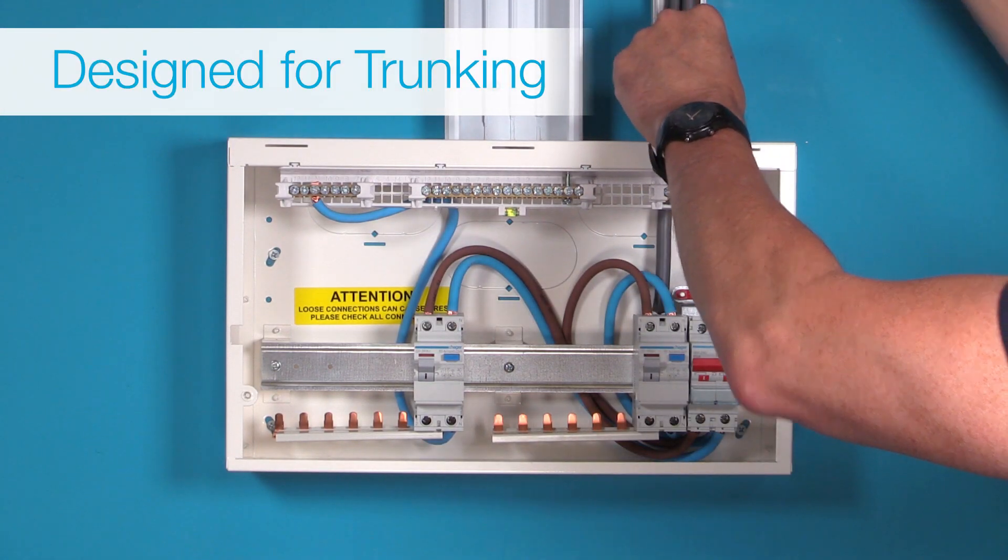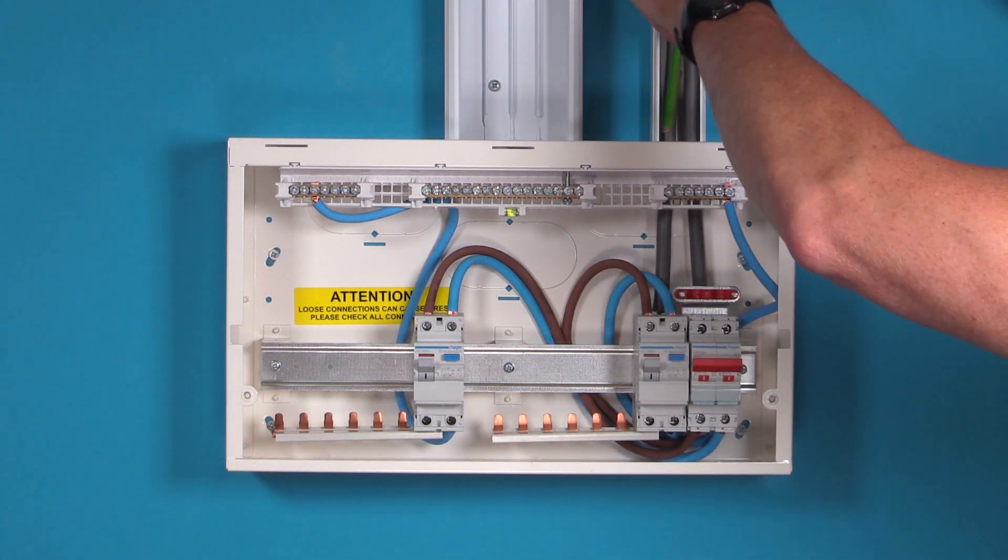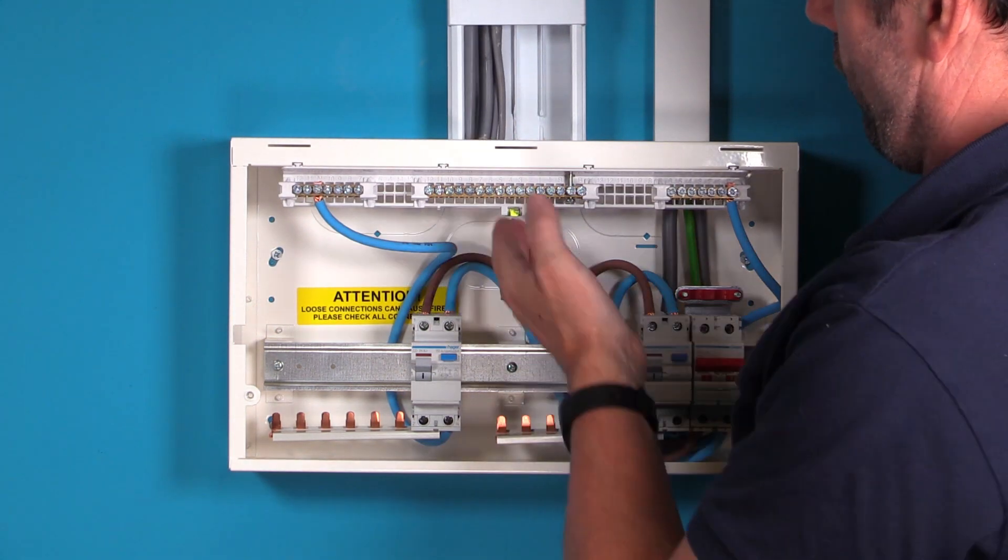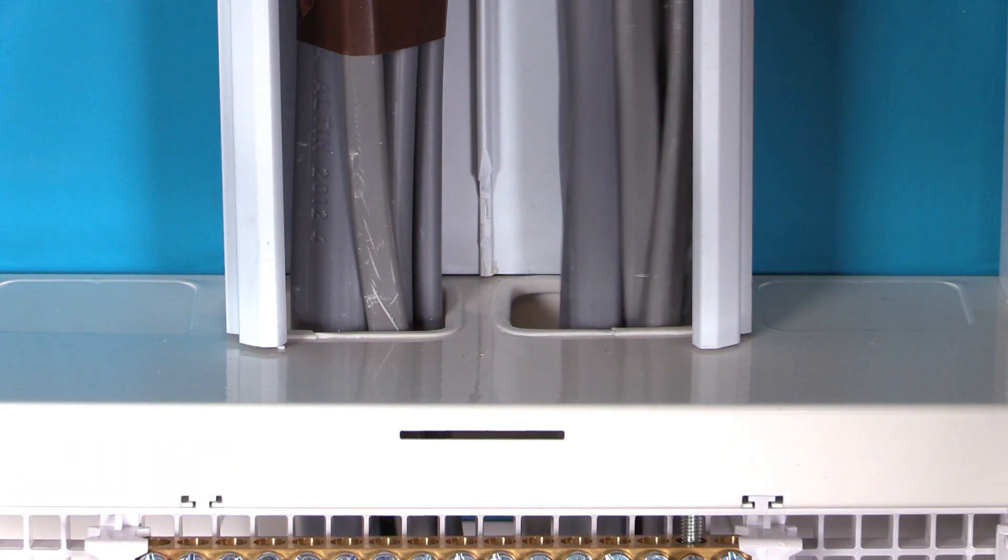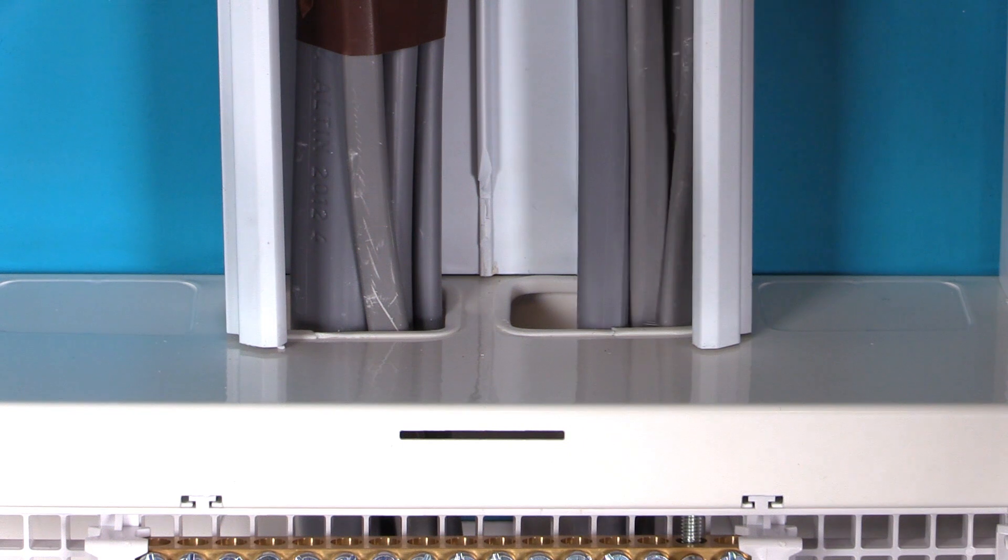In order to maintain the IP4X rating required, we recommend using trunking as our entry points are spaced to fit standard sizes. Using plastic trunking will not affect your compliance to Amendment 3 of the wiring regulations.